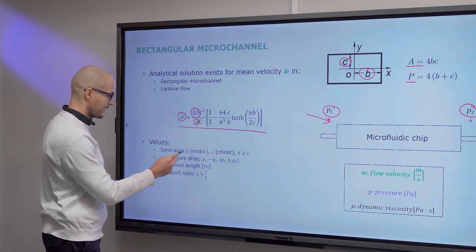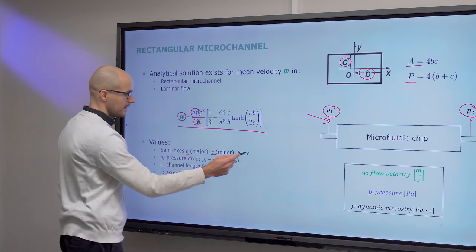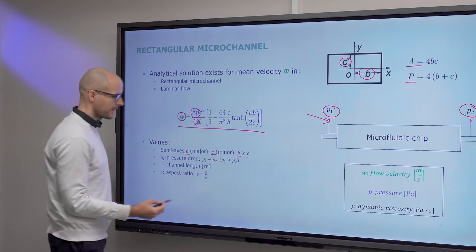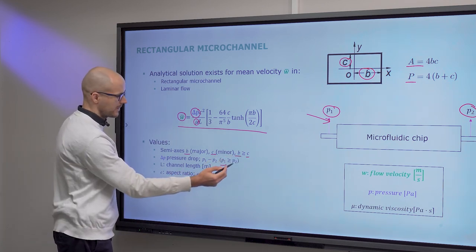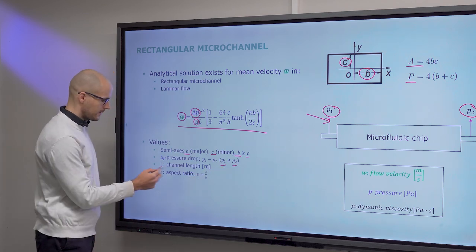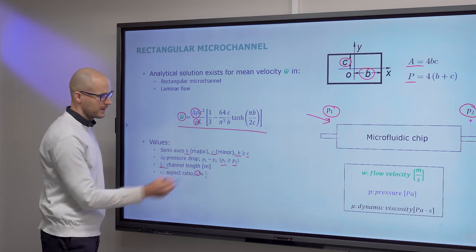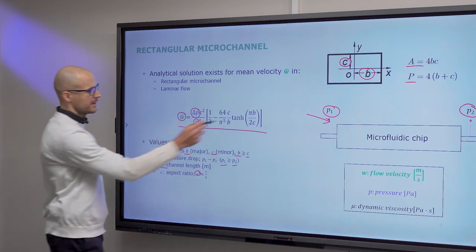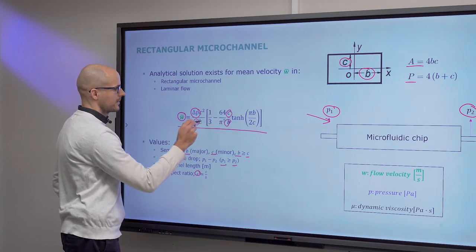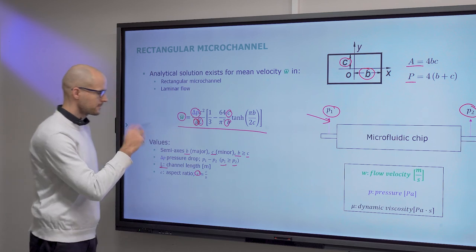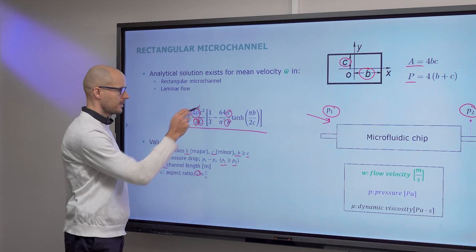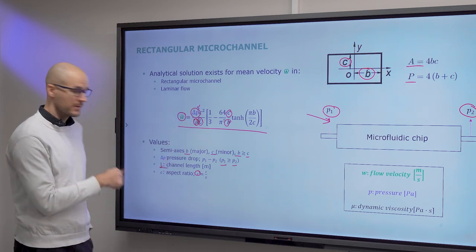So once again, semi-axes B and C. B is the major axis. C is the minor axis. Inlet pressure, outlet pressure, channel length, and the aspect ratio. But what you really need to know here are semi-axes, length, the viscosity, dynamic viscosity, and then the pressure drop. And then you can calculate.